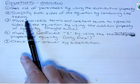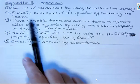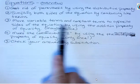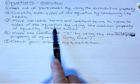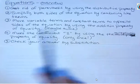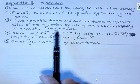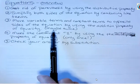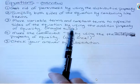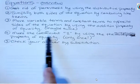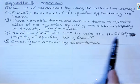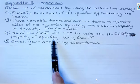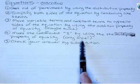We're going to do some examples of all these things. Move variable terms and constant terms to opposite sides of the equation by using the addition property of equality. Remember, sometimes you have to use the addition property of equality twice. Make the coefficient equal positive one by using the multiplication property of equality — you're only going to use the multiplication property of equality once.